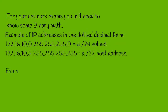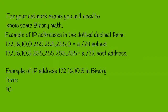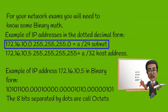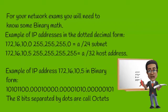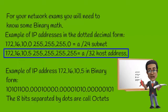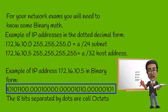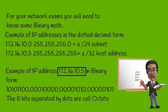Here's an example of a dotted decimal form of an IP address. You see 172.16.10.0 with the subnet mask 255.255.255.0 — this is called a slash 24 subnet. We also have the same network addressed as 172.16.10.5 with 255.255.255.255, which is what we call a slash 32 or host address within that network. The example of an IP address in binary form shows 172.16.10.5 written out in binary — the ones and zeros which total up to 172.16.10.5.